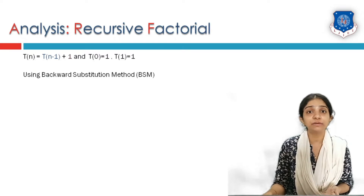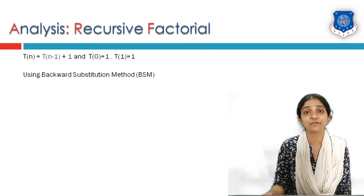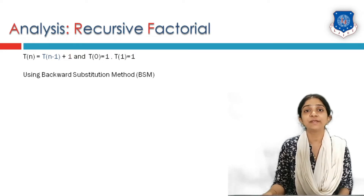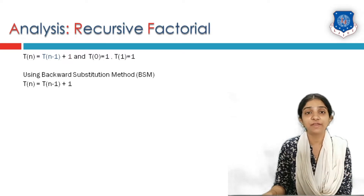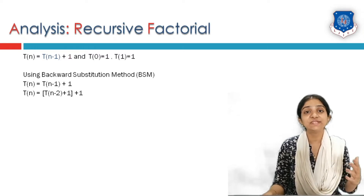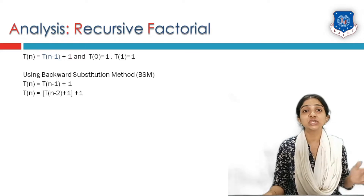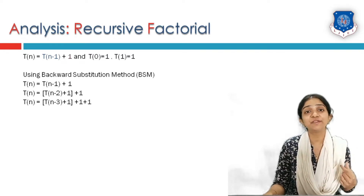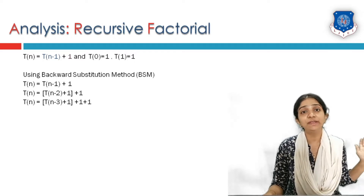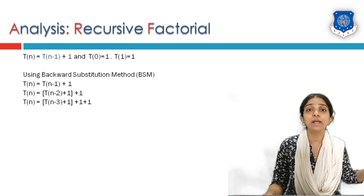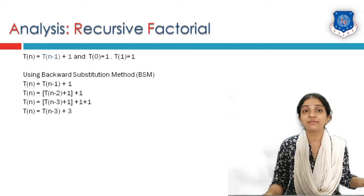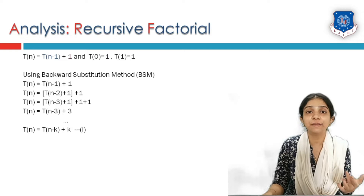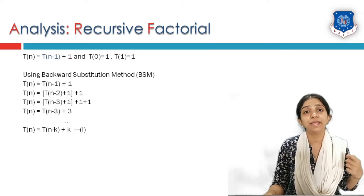We will use the backward substitution method to find the complexity. Instead of T(n-1), I substitute using T(n-2): T(n-1) becomes T(n-2) + 1, so T(n) becomes T(n-2) + 1 + 1. Similarly, substituting T(n-2) as T(n-3) + 1, T(n) becomes T(n-3) + 3. Continuing this substitution, the generalized term is T(n) = T(n-k) + k.